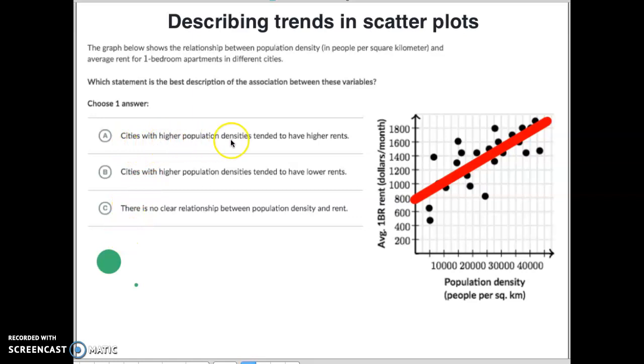Letter A says cities with higher populations tend to have higher rents. So the more people that we have, the higher the price goes up. Well, that certainly looks like it fits. So we'll put that there, but let's read the others. Cities with higher populations tend to have lower rents. So that would mean it would be a line that's going down. So that certainly is not correct.